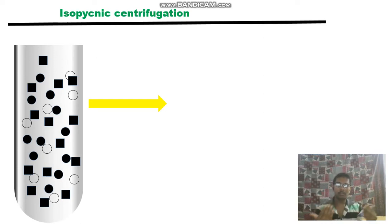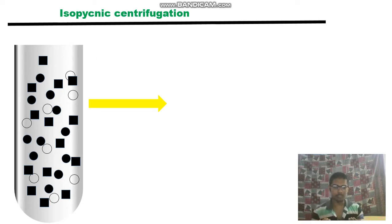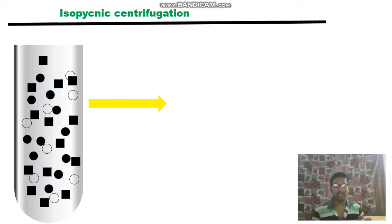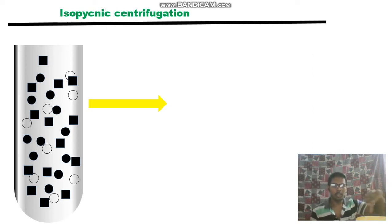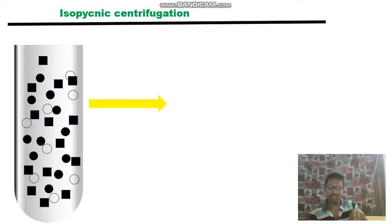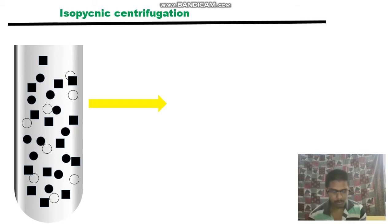Particles form zones containing different densities. In rate-zonal centrifugation, particles do not accumulate at equal-density positions — that only happens in isopycnic centrifugation. This is called the equilibrium position. Particle size does not affect isopycnic centrifugation; separation continues until the density of the particles equals the density of the surrounding solution. That is why it is also called equilibrium separation.